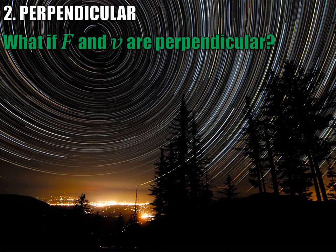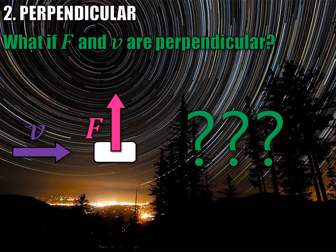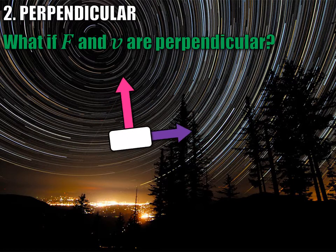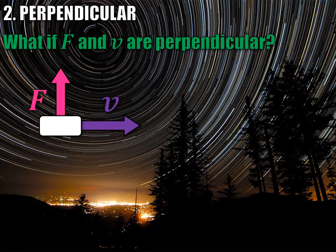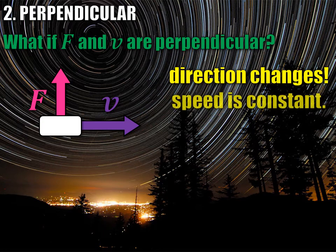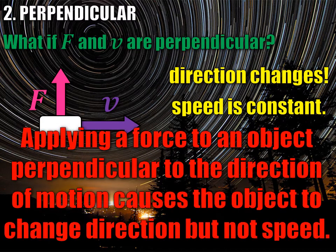So what happens if the force and the velocity are perpendicular to each other? What will this acceleration cause the object to do? Notice that this force is not at all along the same line as the velocity — it's completely perpendicular to it. In this situation, when the force is perpendicular to the velocity, the direction changes, but the speed does not.